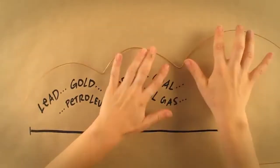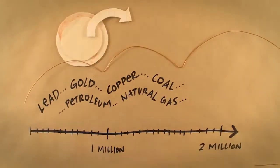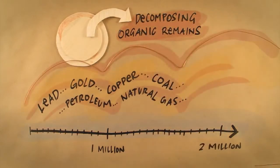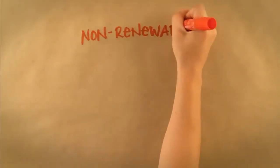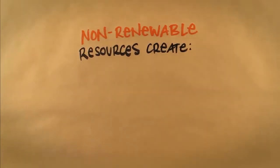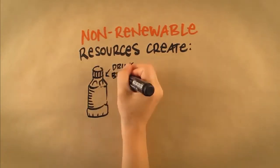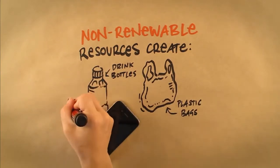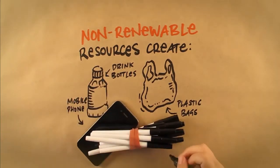They are formed from the decomposing organic remains of animals and plant material beneath the earth's surface. These non-renewable resources are often used to create plastics including drink bottles and grocery bags, electronic goods such as your mobile phone and iPod, and even the plastic ballpoint pens you use to write with.